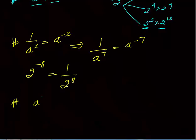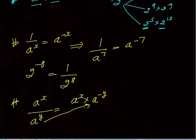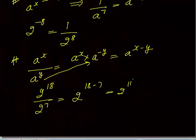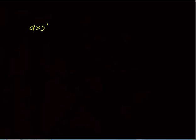Now, if I say A power X upon A power Y, this can be written as A power X into A power minus Y, because 1 upon A power Y can be written as A power minus Y. This will become A power X minus Y. For example, 2 power 18 divided by 2 power 7 will be equal to 2 power 18 minus 7, that is 2 raised to power 11.